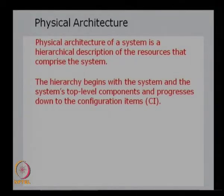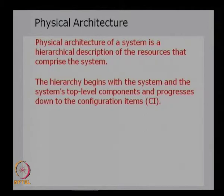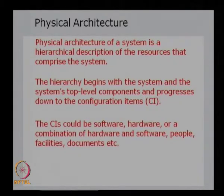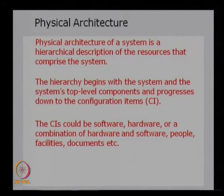The hierarchy begins with the system and its top-level components, and progresses down to configuration items. Configuration items are software, hardware, or a combination of software and hardware, people, facilities, or documents. We list all these items in a hierarchical fashion to complete the physical architecture. From the physical architecture, we can identify which components provide which functions, which components provide multiple functions, and which single components satisfy multiple functions.